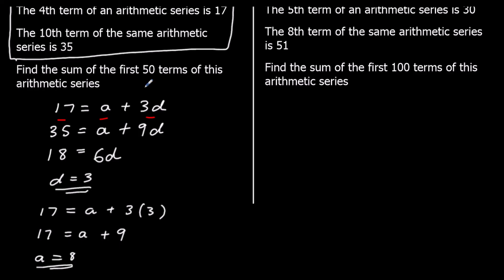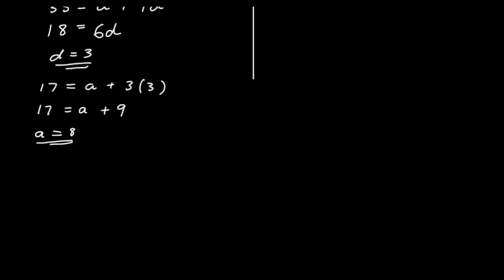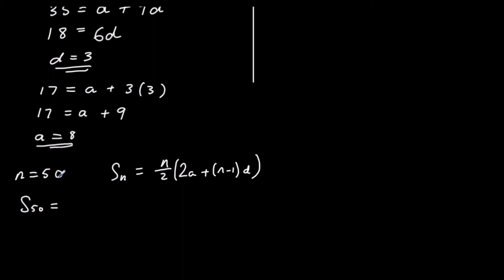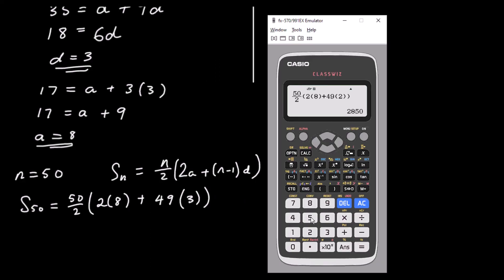Now we can use the sum formula. We want 50 terms, so n = 50. The formula is Sₙ = n/2 × (2a + (n−1)d), giving us 50/2 × (2×8 + 49×3). Typing that into the calculator gives us 4,075.